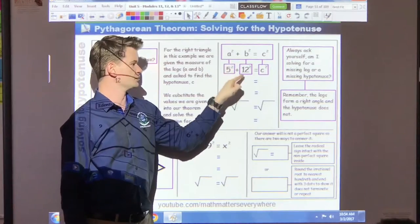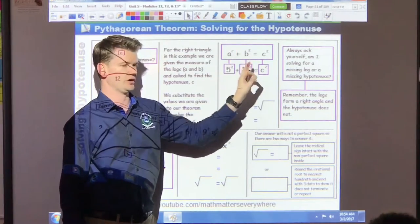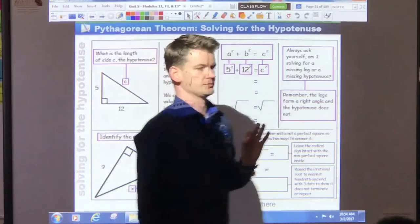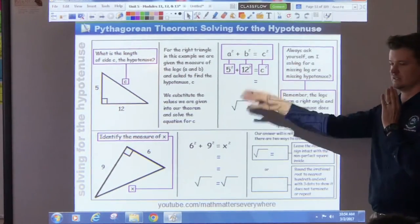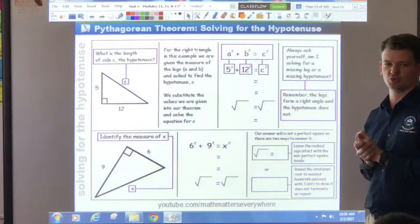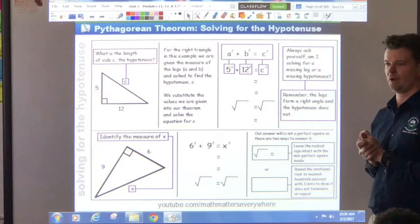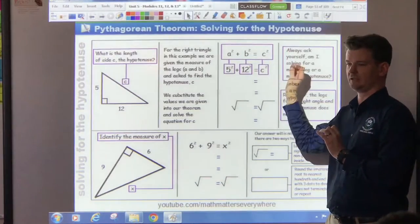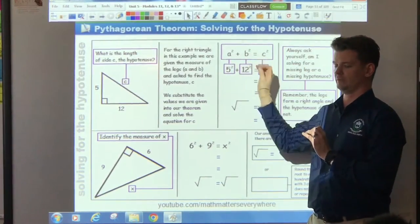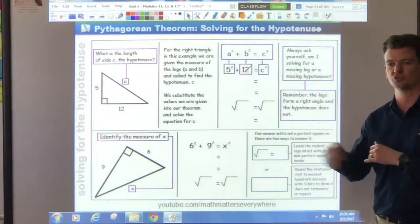We know what the legs are, we're trying to solve for the hypotenuse, so we substitute all of these values into the theorem. 5 squared plus 12 squared equals C squared. Always ask yourself when you're solving these problems, before you start solving, ask yourself a question. Am I solving for a missing leg or a missing hypotenuse?